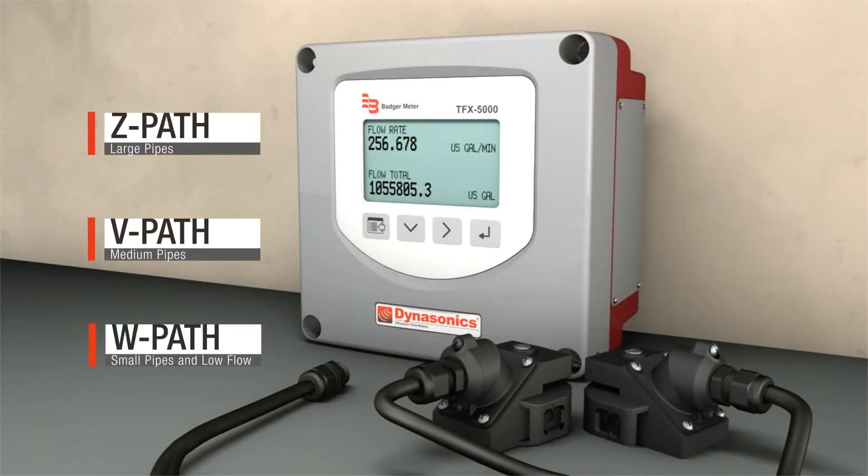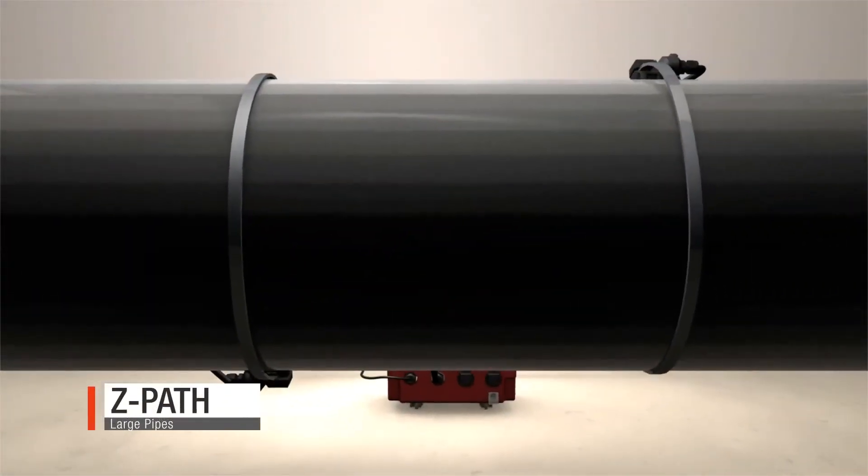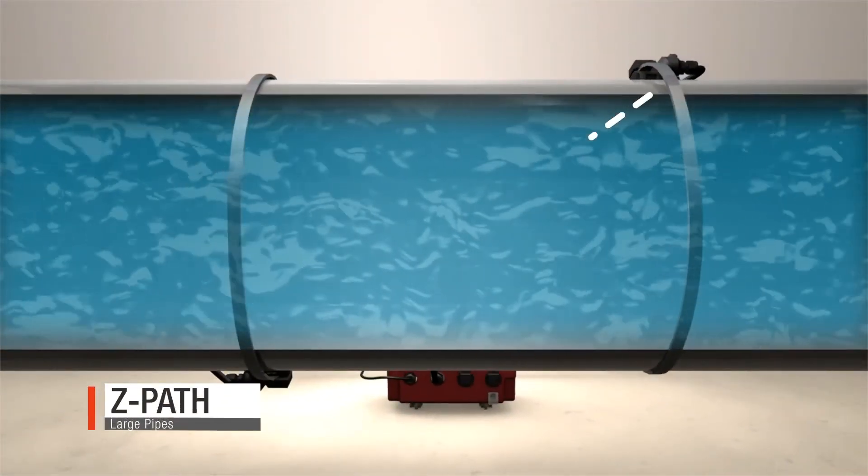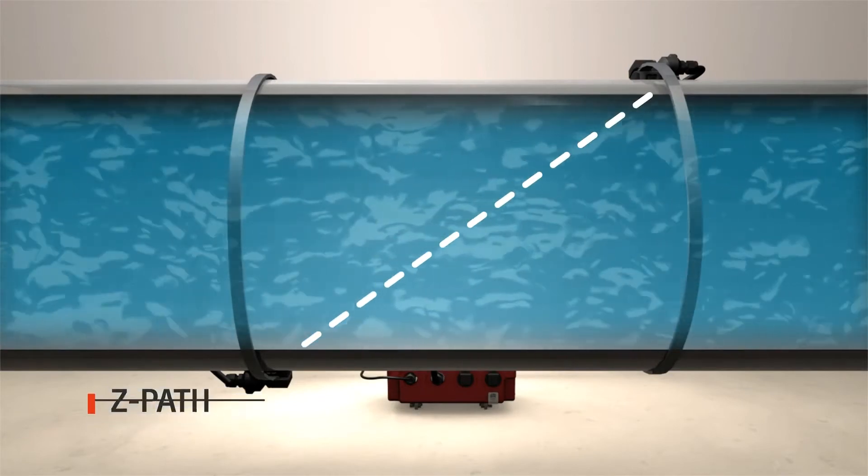Clamp-on transducers can be positioned in multiple ways. A Z path or 1 traverse is typically used on large pipes. The signal is strongest when it travels this type of path.